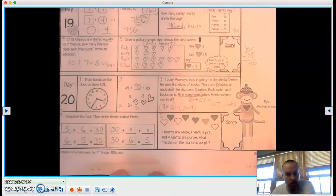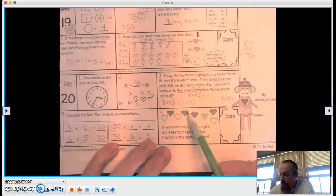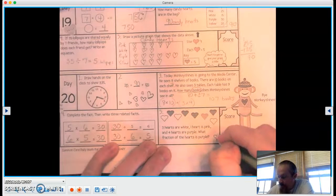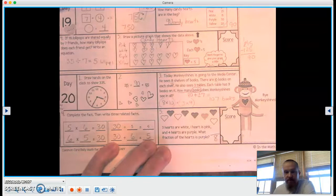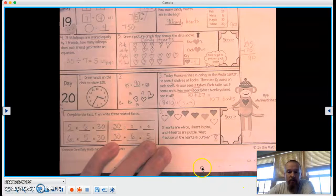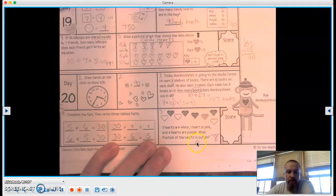So again, let's get a total. 1, 2, 3, 4, 5, 6, 7, 8. So we have 8 total hearts. And we want to know how many hearts are purple. What fraction of the hearts are purple?